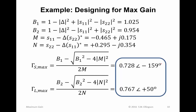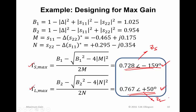Now I want to know what that solution actually is. Working the equations, gamma_S_max and gamma_L_max are given by specific values — please check my math; it's a good exercise to confirm you can do this problem on a homework assignment, exam, or design project. We find gamma_S_max has magnitude 0.728 at an angle of minus 159 degrees. Gamma_L_max has magnitude 0.767 at an angle of plus 50 degrees. These represent impedances, so you can easily translate these two values into the actual source and load impedances Z_S and Z_L.